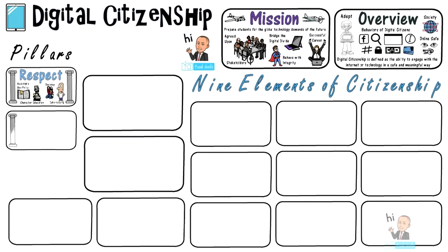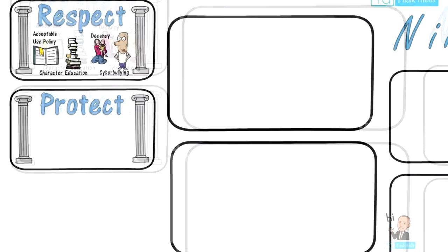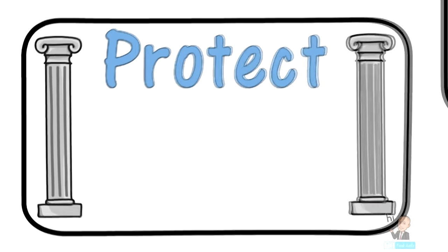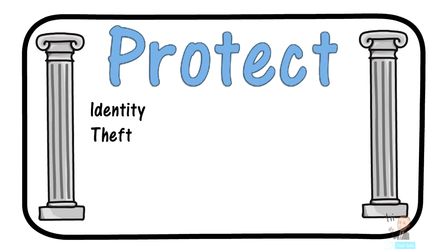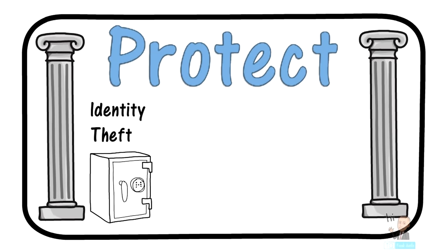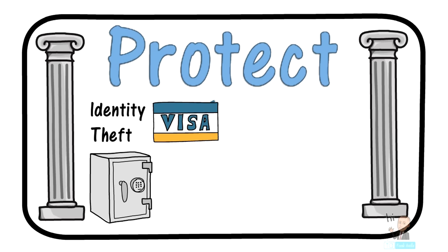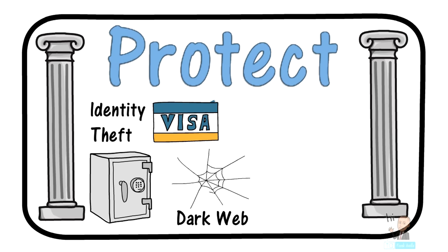Next, we're going to move on to the second pillar, and that is to protect. One of the most important things to protect yourself against is identity theft. A person's private information must be protected at all costs. One way online thieves use private information is to open up credit cards in the victim's name. Unfortunately, once your information is stolen, it can find its way to the dark web. Information is bought and paid for.